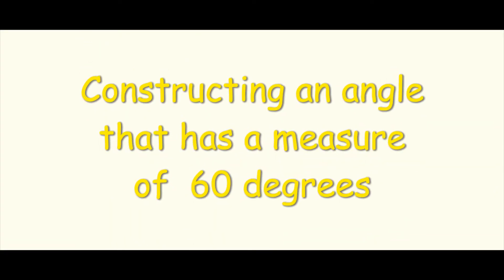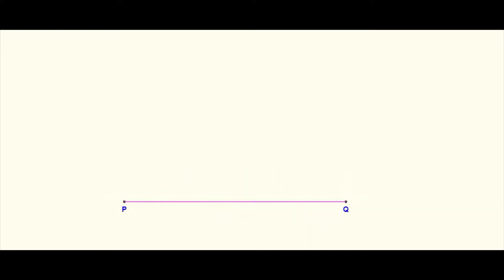In this video, what we're going to focus on is how we construct a 60-degree angle. The first thing is to draw a straight line and name the endpoints P and Q. Note that I have line segment PQ, and I want my angle to be constructed at point P.